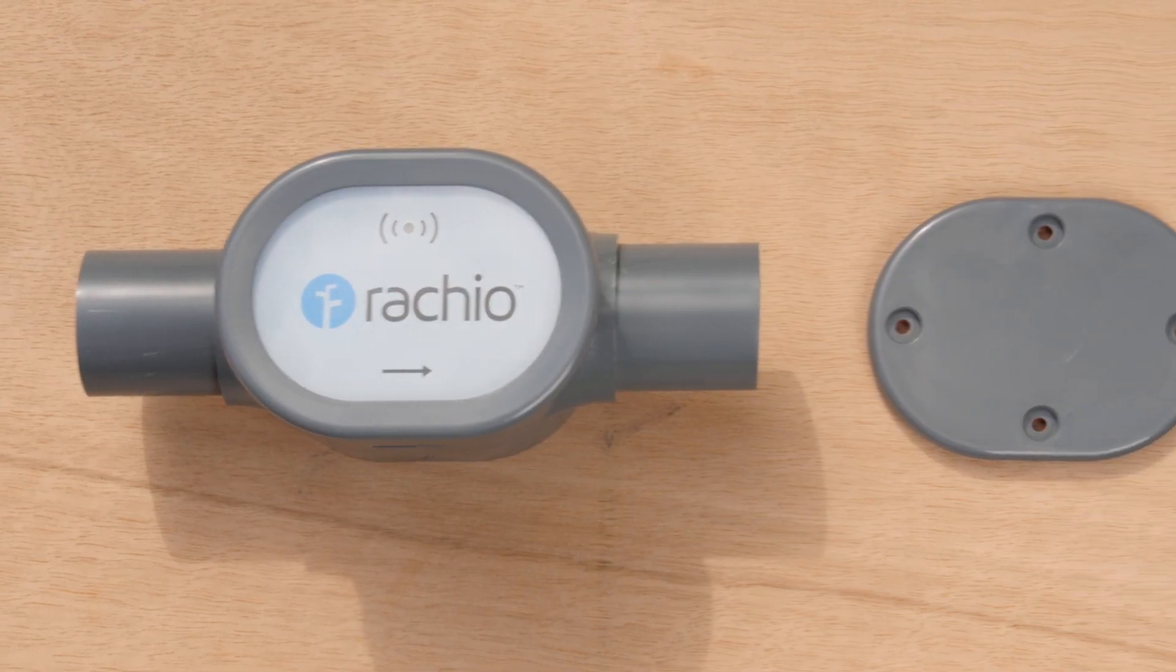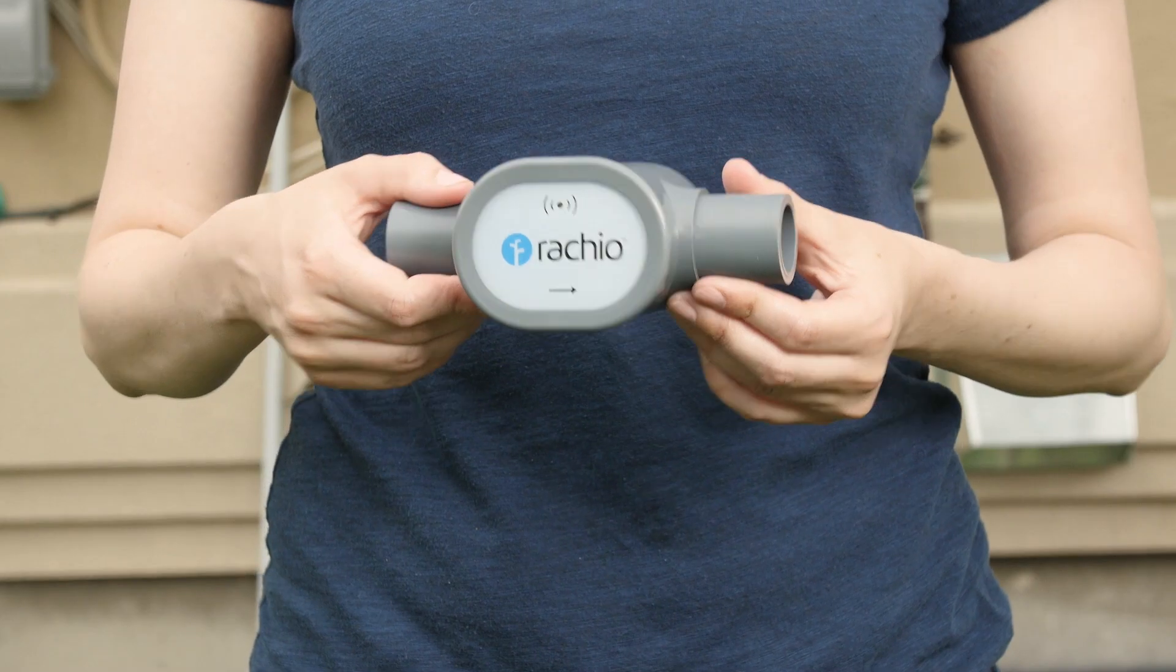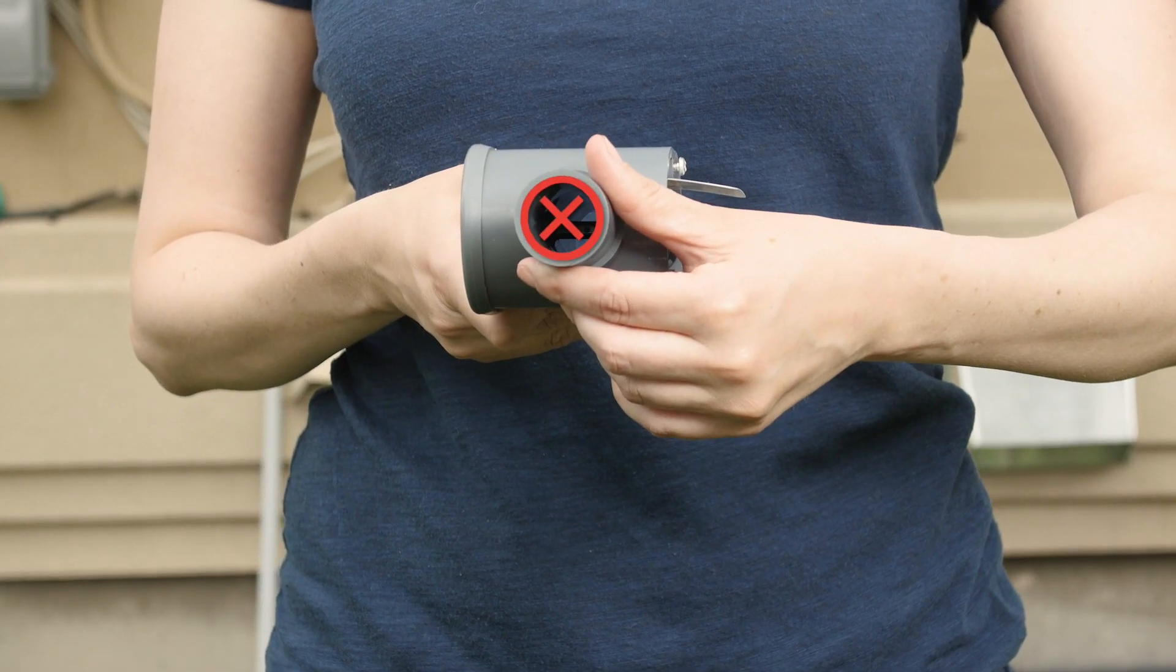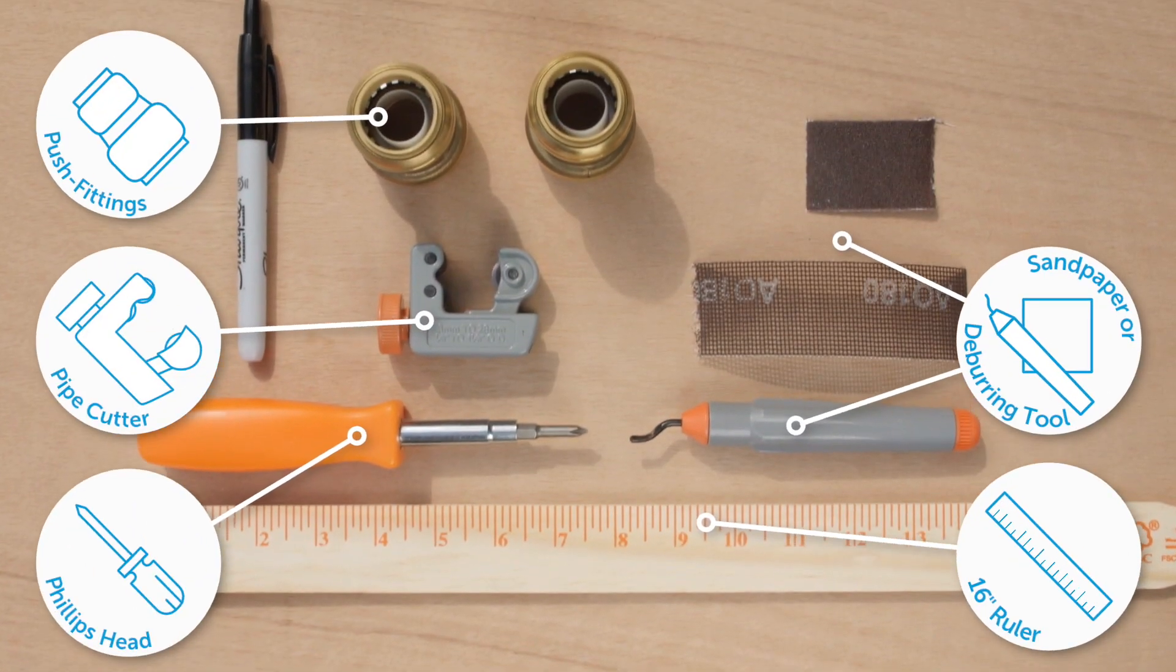In the box you'll find the wireless flow meter, battery cover with screws, and two AA batteries. Be aware that inserting your fingers or other objects into the flow meter will damage the sensor. Gather the fittings and the required tools.